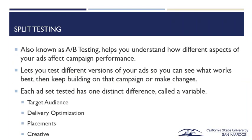Split testing, also known as A/B testing — the same concept used in email marketing — helps you understand how different aspects of your ads affect campaign performance. It lets you test different versions of your ads to see what works best, then keep building on the campaign or make changes. Each ad set tested has one distinct difference called a variable: target audience, delivery optimization, placements, or creative. For example, you might run the exact same copy and demographics but change only the image and test whether image A outperforms image B. You want to constantly be looking at your ads and pivoting.